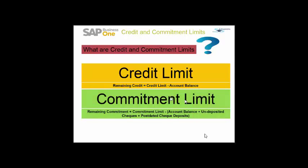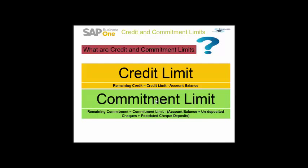What is the commitment limit? The commitment limit is similar to the credit limit. The only difference is that the commitment limit takes undeposited checks and posted check deposits into consideration. The customer commitment limit is also defined in the business partner master data in the payment terms. The formula is: Remaining Commitment = Commitment Limit minus Account Balance plus Undeposited Checks plus Posted Check Deposits.